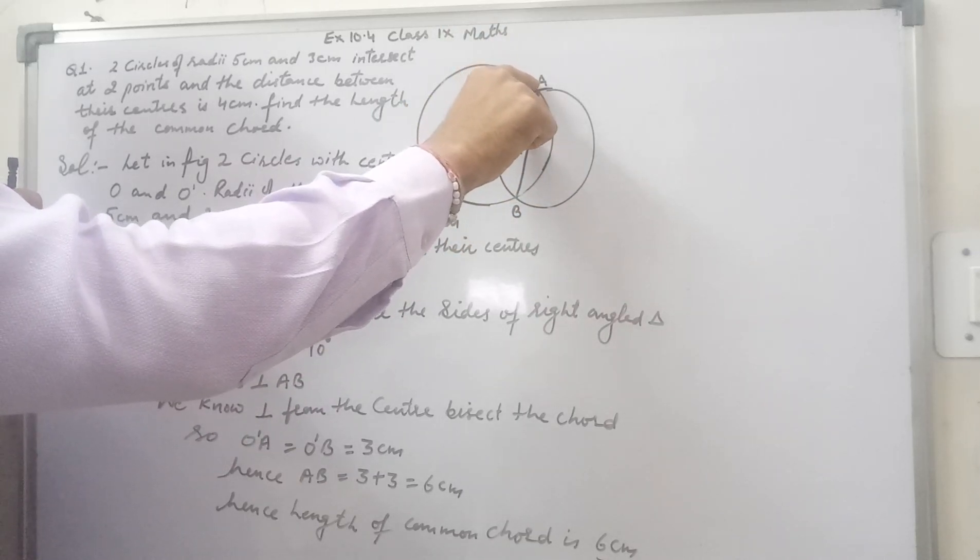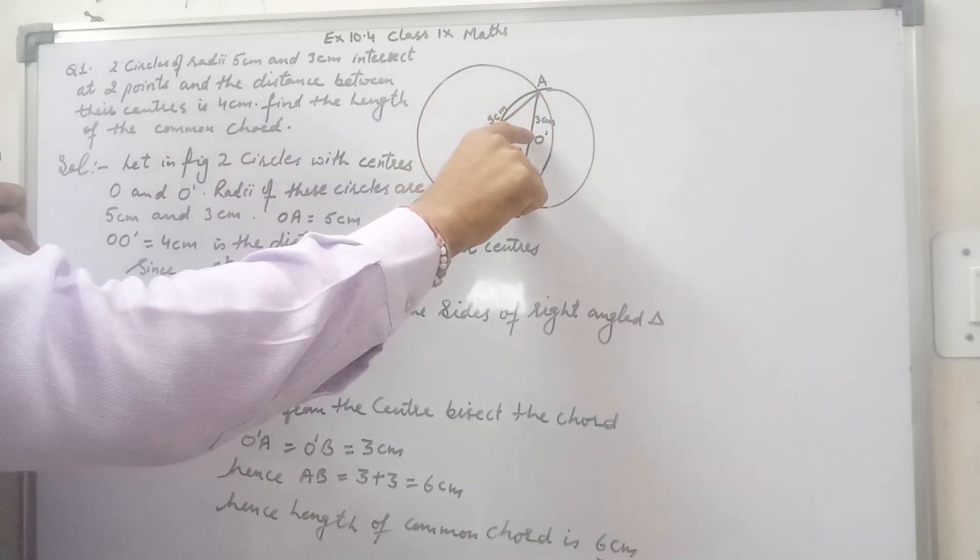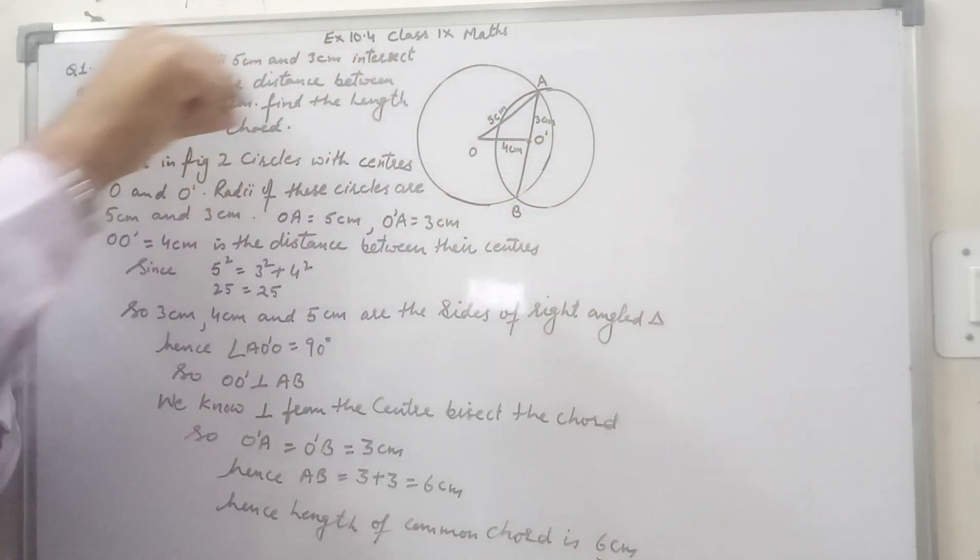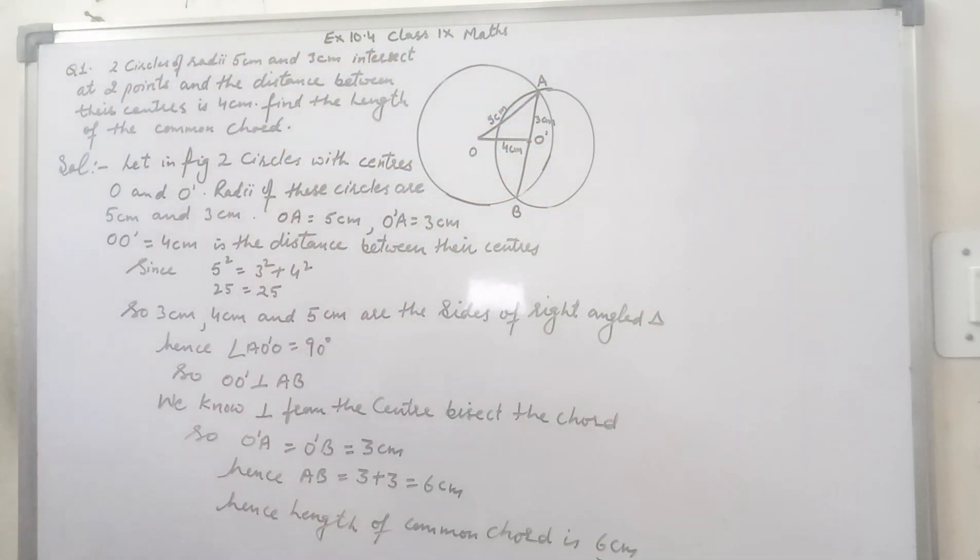If it is bisecting chord AB then it means O dash A is equal to O dash B. If O dash A is 3 cm then O dash B is also 3 cm hence AB would be 6 cm.